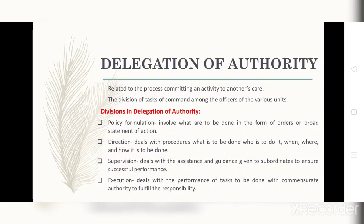The divisions in delegation of authority are as follows. First, policy formulation — involves what is to be done in the form of orders or broad statements of action. For example, the president orders that the residents of Tuguegarao City should all be given food packs by the DSWD. That is an example of policy formulation in the form of orders.